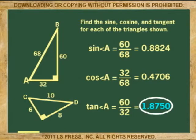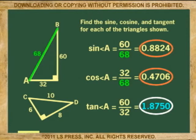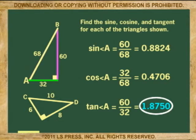Notice here that sometimes the tangent could be a value greater than 1, while the sine and cosine would always be less than 1, or a decimal. This is because the denominator of the ratio for sine and cosine is always the hypotenuse, which is the largest side of a right triangle. In the case of the tangent, the ratio does not involve the hypotenuse.